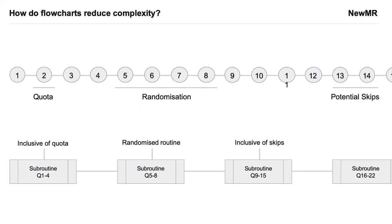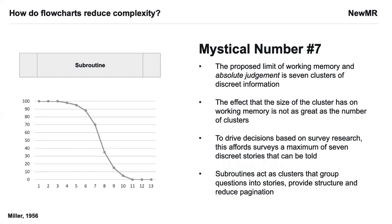A further way to deal with flowcharts is to use subroutines. Subroutines are blocks of questions — in the case of surveys — or blocks of actions in the language of a flowchart. For example, questions one to four is one subroutine around the quota logic; questions five to eight is another subroutine around the randomization routine; and nine to fifteen is another subroutine of skips. This subroutine element, by blocking questions together with those actions, allows us a way of zooming in and out of a flowchart. We can zoom out to get a macro view, or zoom in to see the detail of one of those individual subroutines. A further way of thinking about subroutines is to think about stories — telling the survey through a series of stories, where each subroutine is a story in itself.